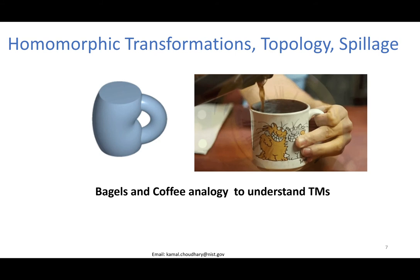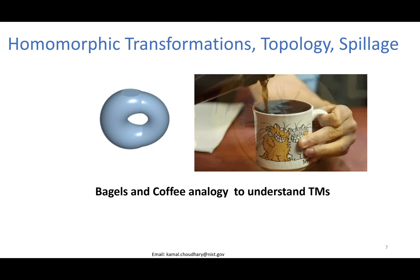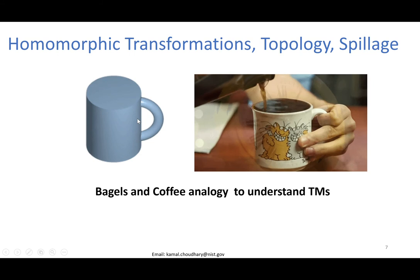When we show topology, basically, we use homeomorphic transformation in topology. In that respect, the bagel and a coffee cup are the same. Why? Because there are only one hole.